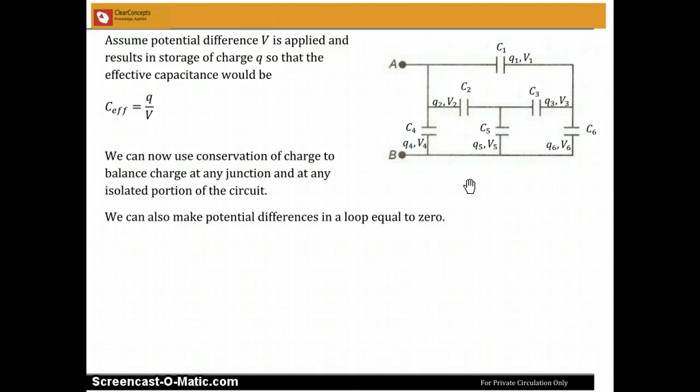Then we need at least two more because there are six variables really, either all the charges or all the potential differences. So now we need two more. So we can consider various loops here and say that the potential differences in any loop is equal to zero. So for example, if I go around the C1, C3, C2 loop, I can say that V1 minus V3 minus V2 is equal to zero.